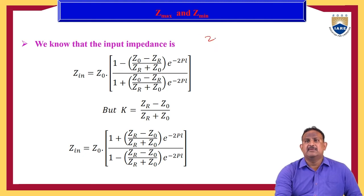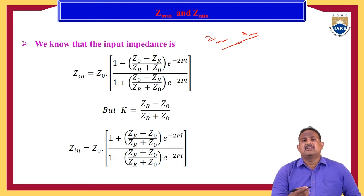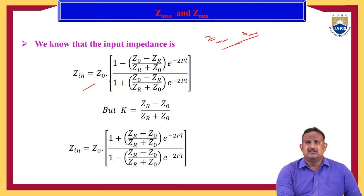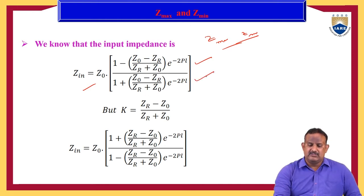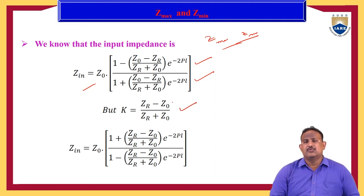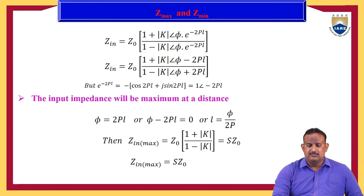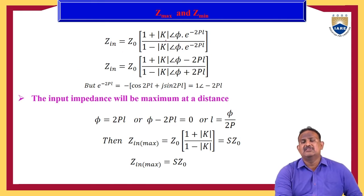Now we will find Z_max and Z_min — maximum and minimum impedance. The input impedance of a transmission line is Z_n = Z₀ · (1 − ((Z₀ − Z_R)/(Z_R + Z₀))·e^(−2pl)) / (1 + ((Z₀ − Z_R)/(Z_R + Z₀))·e^(−2pl)). The reflection coefficient k = (Z_R − Z₀)/(Z_R + Z₀). Substituting the reflection coefficient, and expressing it with magnitude |k| and phase angle φ, we get Z_n in terms of |k| and φ.